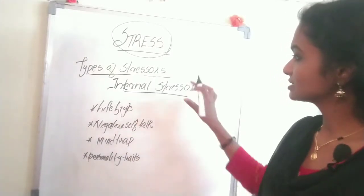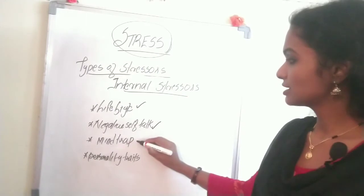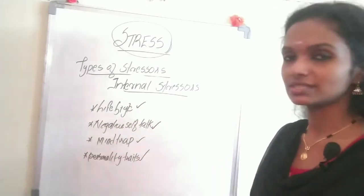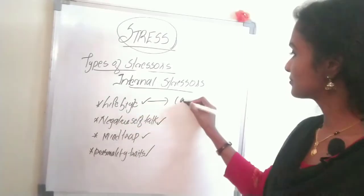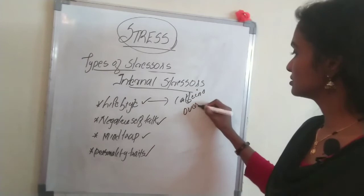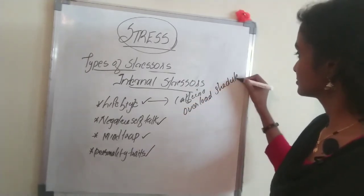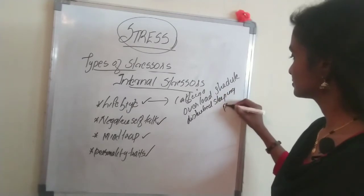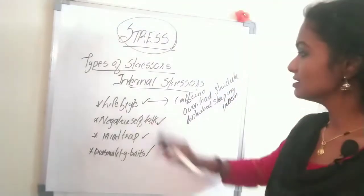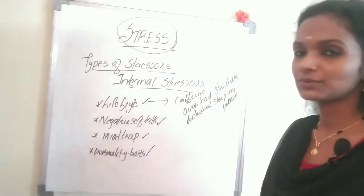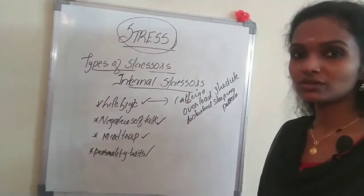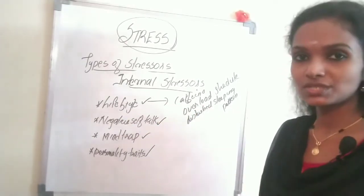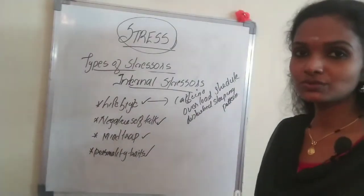Now we will look at internal stressors: lifestyle, negative self-talk, mind traps, and personality traits. Examples for lifestyle include use of caffeine, overloaded schedule, and disturbed sleeping pattern. Changes in lifestyle can cause stress. The toxic effect of caffeine can cause sleeping disturbances, which changes lifestyle. An overloaded work schedule and disturbed sleeping pattern are also main causes of stress.